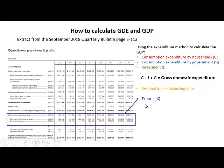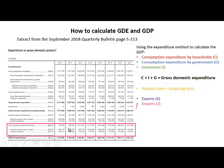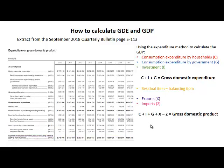We subtract imports of goods and services. So gross domestic product is equal to C plus I plus G plus X minus Z — this is the gross domestic product.